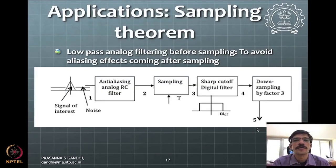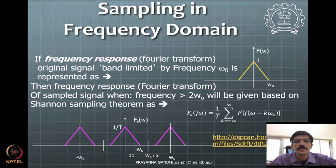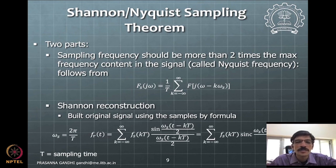In the last class, we were looking at sampling and the application of the sampling theorem. We saw two aspects: the sampling theorem itself and reconstruction. Ideal reconstruction involves sinc reconstruction. The sampling theorem states that a signal needs to be sampled at least twice its frequency content. If not done, the signal contents are lost; in practice, we need about 3 to 4 times the sampling frequency.